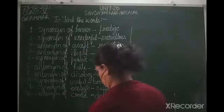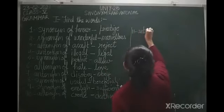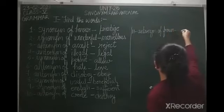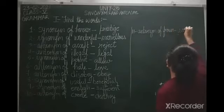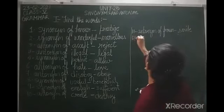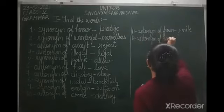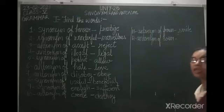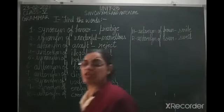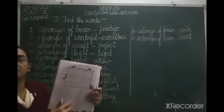The eleventh one: antonym of frown is smile — S-M-I-L-E. And the last one, twelfth: antonym of sour is sweet. With this we have finished Exercise 1. Now you need to find all these words in the grid and mark them.